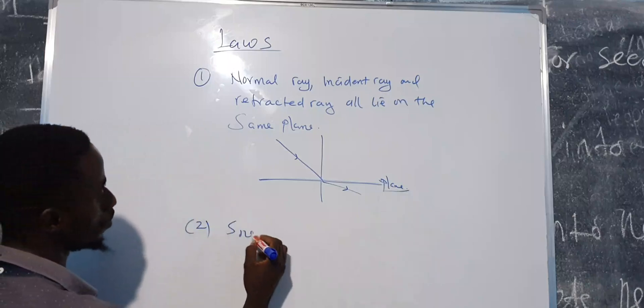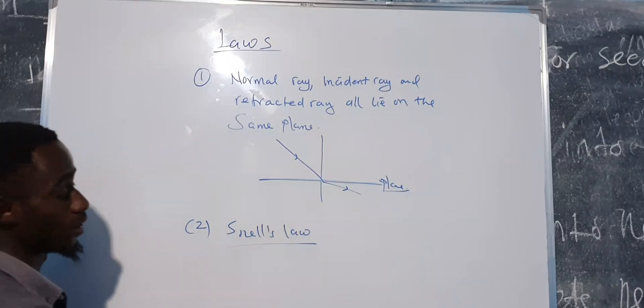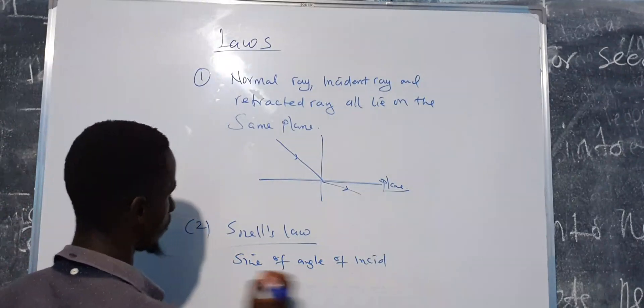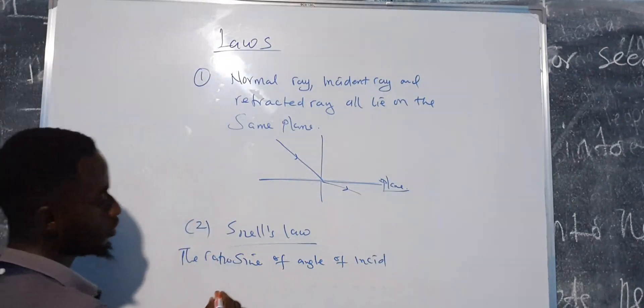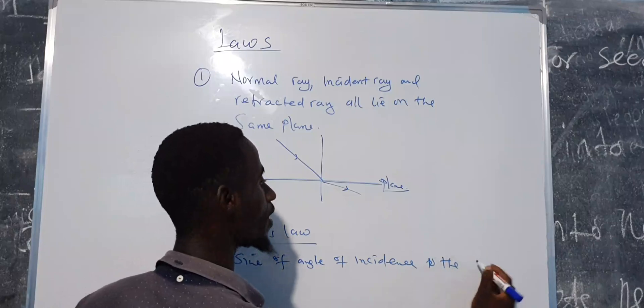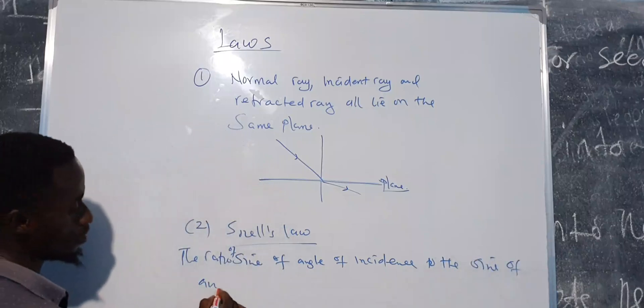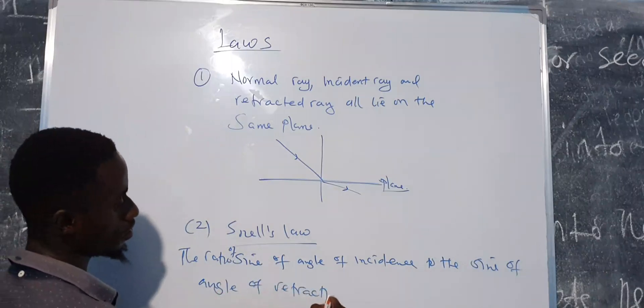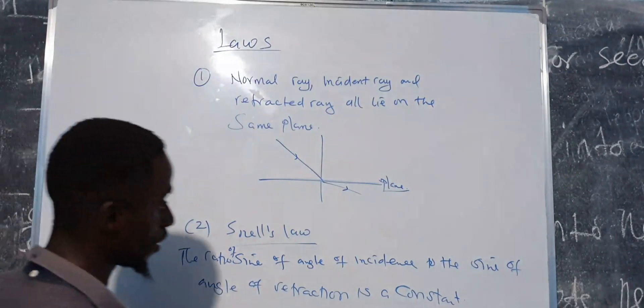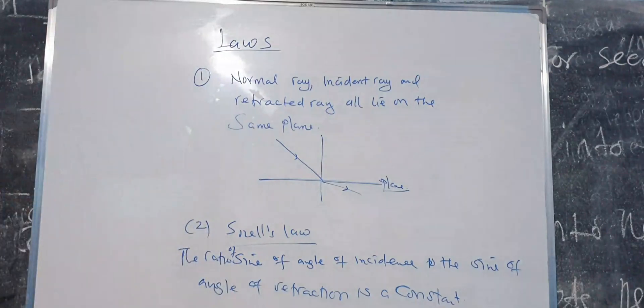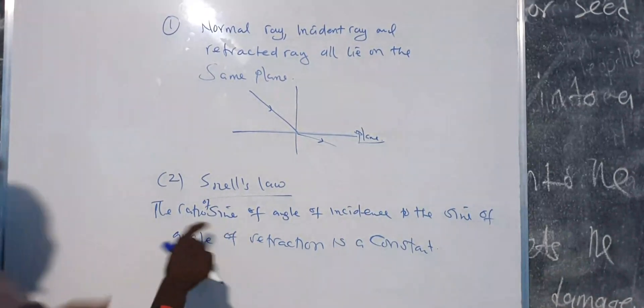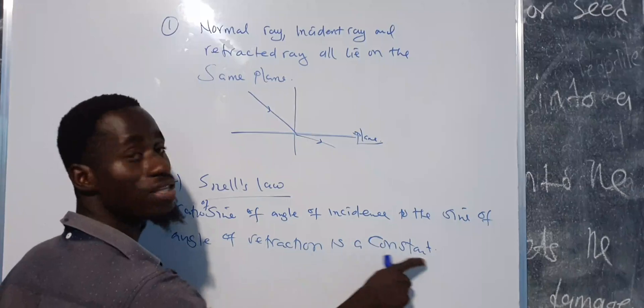Number two, which is what we call Snell's law. Snell's law states that the ratio of sine of angle of incidence to the sine of angle of refraction is a constant. So that's Snell's law. The sine of angle of incidence to the sine of angle of refraction is what? It's a constant.